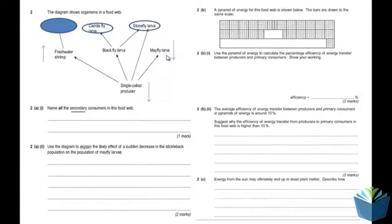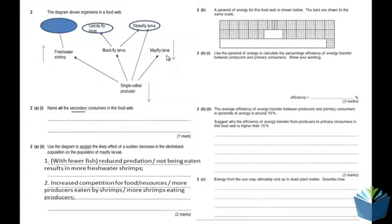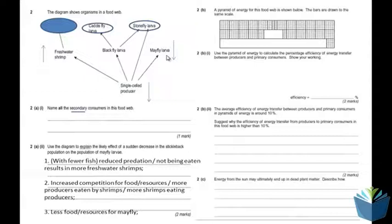The marks allowed on the mark scheme were: reduced predation results in more freshwater shrimps; increased competition for food and resources causes producer numbers to go down because they're being eaten; and therefore less food resources for the mayfly, so you'd expect them to reduce.